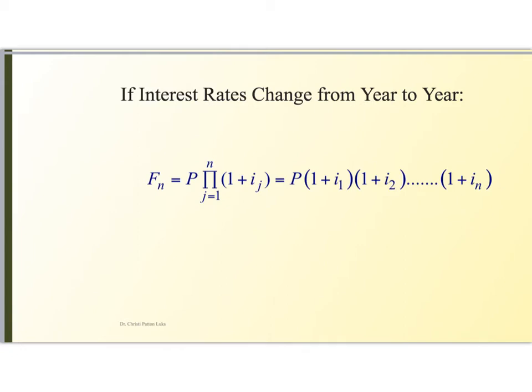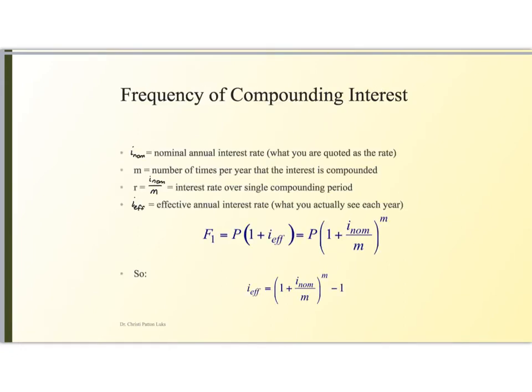Occasionally, we will have things where the interest rate changes from year to year. In real life, this would be the case, in which case all you're going to do is multiply by (1 plus the interest rate) for that year. And you do that every year throughout the life of the loan.